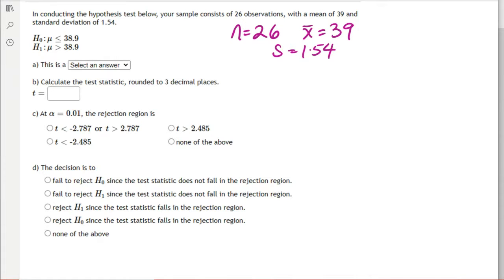The first question is asking us, is it a one-tailed test? What we know is that if the alternative is not equal to, it's a two-tailed test, because that means it could be less or greater. But if the alternative is a less than or a greater than, it's a one-tailed test.